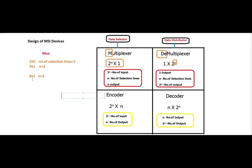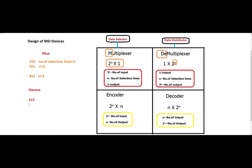For the multiplexer, we have 2-by-1, 4-by-1, 8-by-1, 16-by-1, and so on. In the case of the demultiplexer, just the opposite — the number of inputs and outputs are exchanged: 1-by-2, 1-by-4, 1-by-8, and so on.